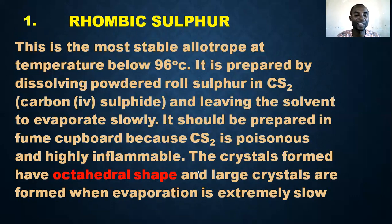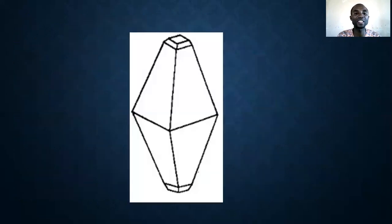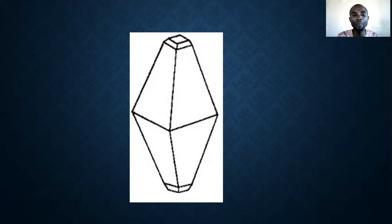Large crystals are formed when evaporation is extremely slow. The shape is orthorhedral — look at the image — this is the shape of rhombic sulfur.